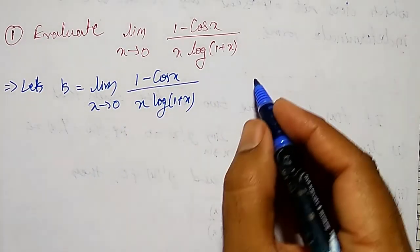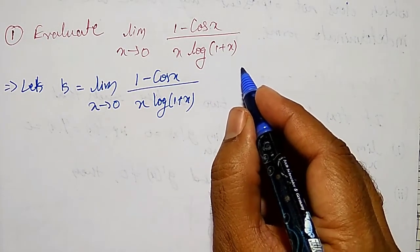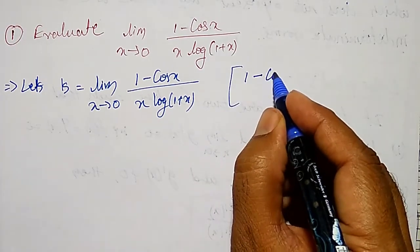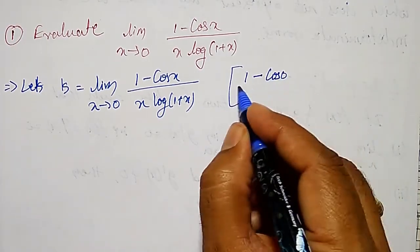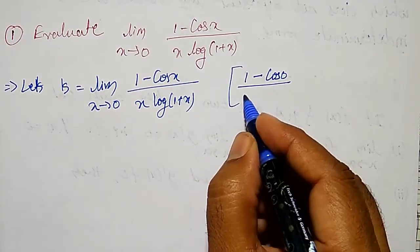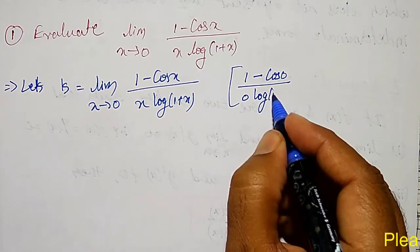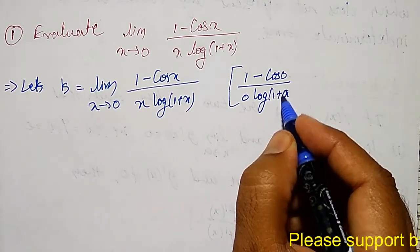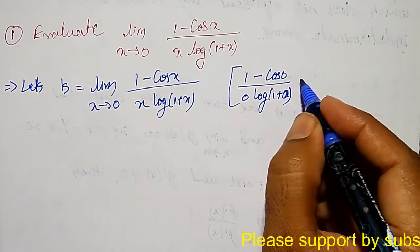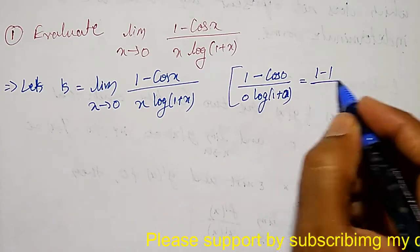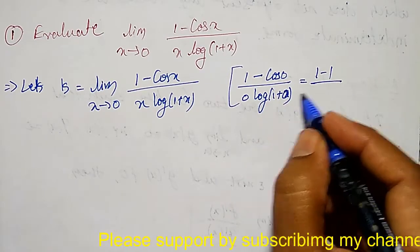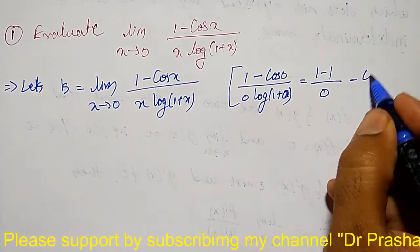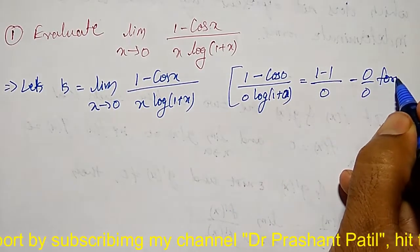Let me put x equal to 0. I get 1 minus cos 0 divided by 0 into log of 1 plus 0, which gives 1 minus 1 divided by 0, and anything divided by 0 gives 0. So this is a 0 by 0 form.